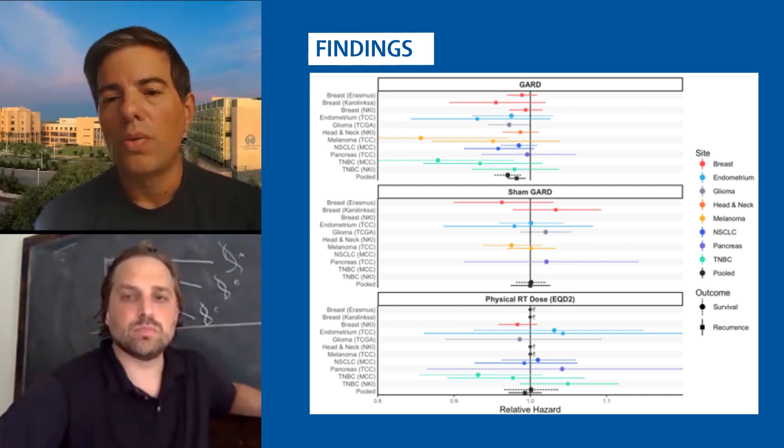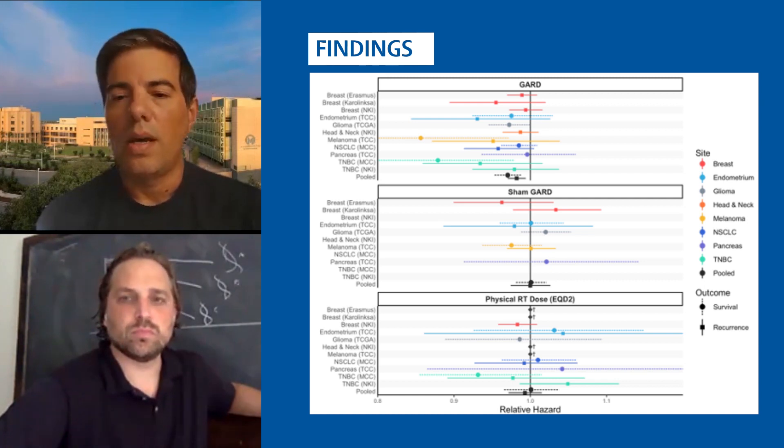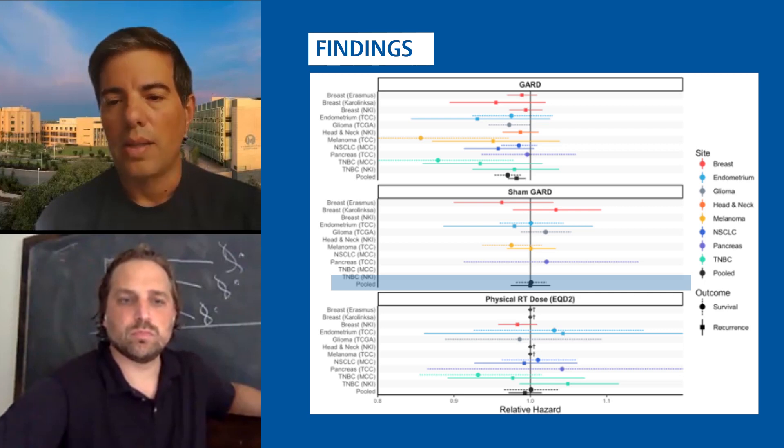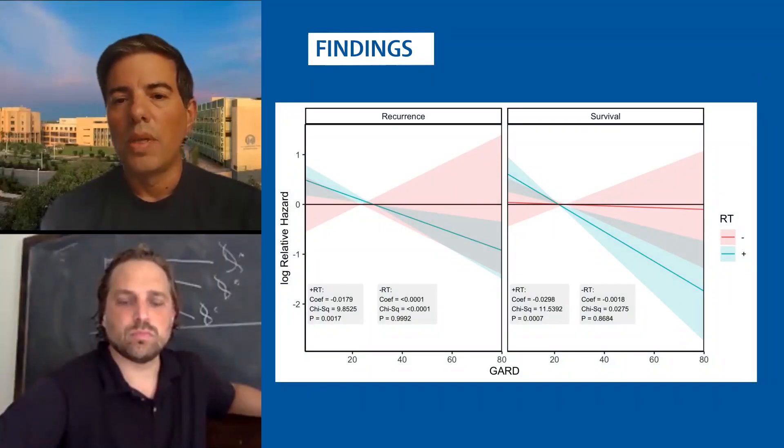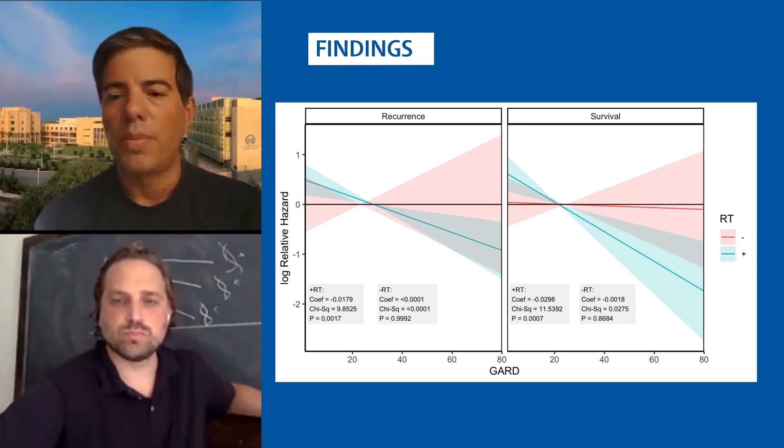Also importantly, we show that in patients treated without radiation, we calculated a sham GARD, we sort of simulated that these patients had received radiation to see if the parameter of GARD would predict the outcome of these patients. And as you can see, there is no association in the pooled analysis between sham GARD and clinical outcome. So the critical idea here is that, of course, the GARD is only predictive in patients that are receiving radiation.